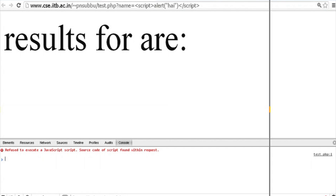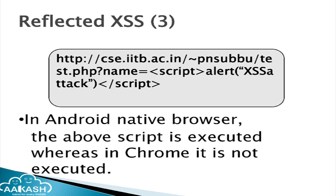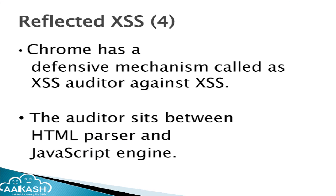Chrome has a defensive mechanism called the XSS auditor, which avoids some types of cross-site scripting. It sits between the HTML parser and JavaScript engine and interrupts all JavaScript requests to see whether the script is found in one or more parameters. If it is found in the parameters, it stops executing it.